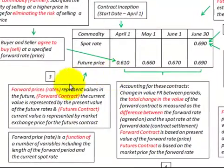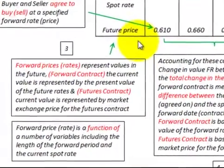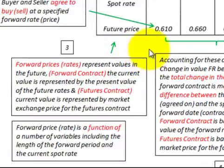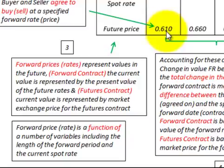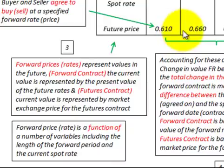These forward rates or prices represent values in the future. For a forward contract, the current value is represented as the present value of the futures rates. For a futures contract, the current value is represented by the market exchange price for those futures contracts.